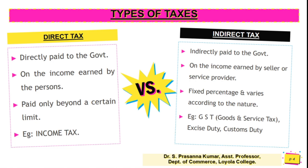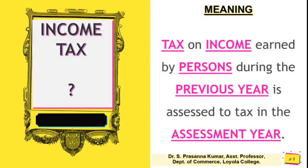Direct tax is paid only beyond a certain limit — a famous example is income tax. For indirect tax, there is no such limit; it applies at percentages such as 0%, 5%, 12%, or 18%, varying by the nature of the goods or service. Examples of indirect tax include Goods and Services Tax (GST), excise duty, and customs duty.